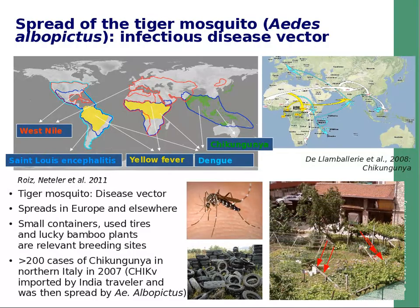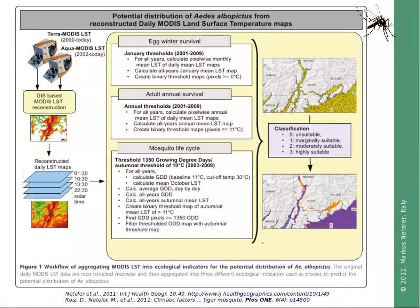This is relevant for us because this vector is temperature-dependent, and we have been developing a system to analyze the potential distribution of Aedes albopictus from reconstructed MODIS land surface temperature maps. We used three different indicators: egg winter survival analyzed from January threshold data; adult annual survival from annual threshold maps; and the mosquito life cycle based on growing degree days with a correction for autumnal temperature. This has been published in the literature, with links to documentation and publications shown at the slide bottom.